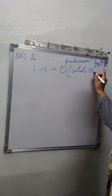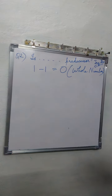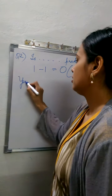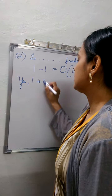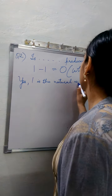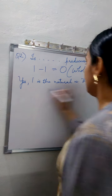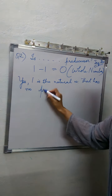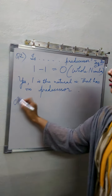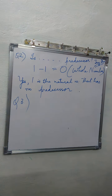0 is a whole number, not a natural number. So yes, there is a natural number that has no predecessor — 1 is the natural number that has no predecessor. This completes question number 2.